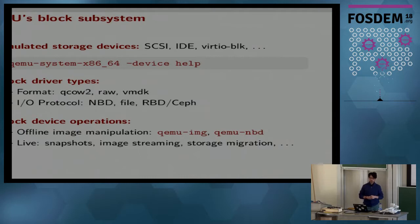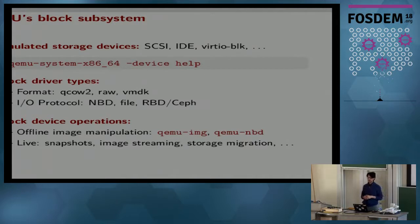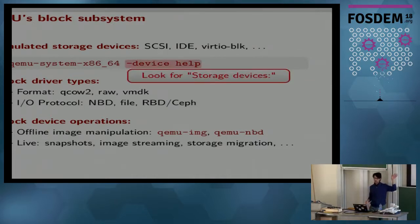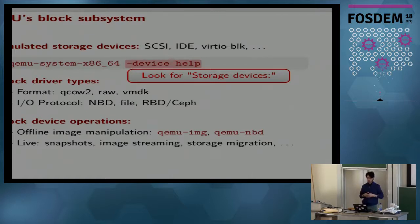QEMU's block system offers a bunch of things. To begin with, there are guest-visible emulated storage devices like SCSI, IDE, or para-virtualized drivers where the guest knows it is being virtualized, like VirtioSCSI or VirtioBlock. If you run that command on top and look for the storage devices section, you see different kinds of devices that QEMU has to offer, giving you a nice picture of all the tools it provides.